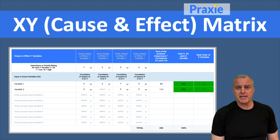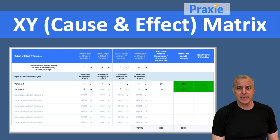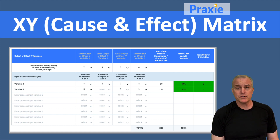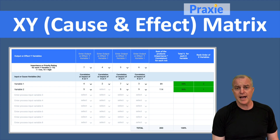The cause and effect matrix allows you to identify all the different variables that are causes in a process and that you want to measure. You can then look at the effects in terms of those customer values or outputs that you're looking for, and score each of the inputs based on the outputs. That allows you to understand the causes — those inputs — and the effects — the outputs — and the impact that each cause will have on achieving the goal you want to achieve for your customers.